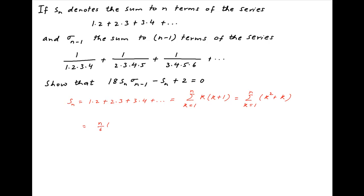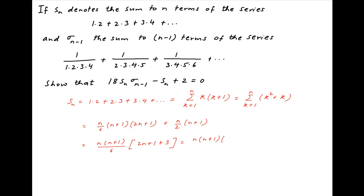Summation of k² equals the sum of squares of the first n natural numbers, which is n(n+1)(2n+1)/6, and summation of k is the sum of the first n natural numbers, equal to n(n+1)/2. Taking n(n+1)/6 common, we get 2n+1+3 in brackets. Therefore Sn simplifies to n(n+1)(n+2)/3. Let's call this result 1.